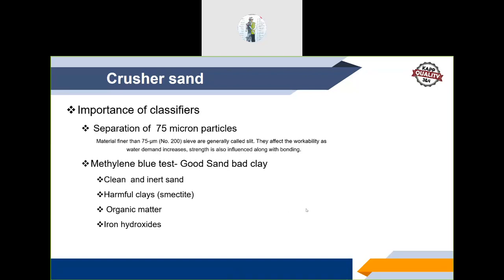Particles below 75 microns are called silt. Clay particles have a layered structure — they absorb water and swell, and get deposited on the periphery of aggregate particles, preventing cement particles from bonding. Removal of particles below 75 microns is therefore very essential. The quantity of 75-micron particles in manufactured sand can be determined by wet sieving or by the volumetric method.